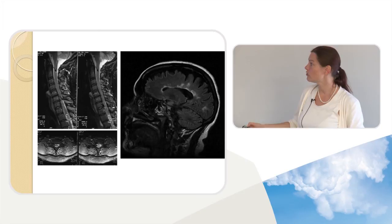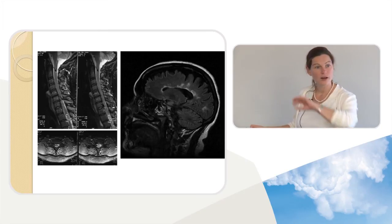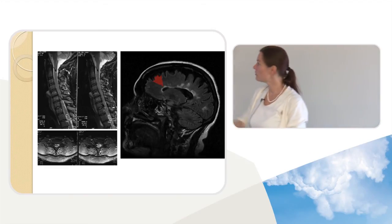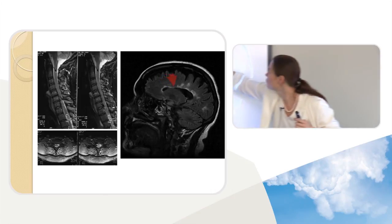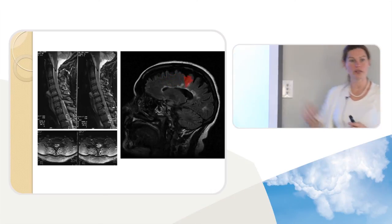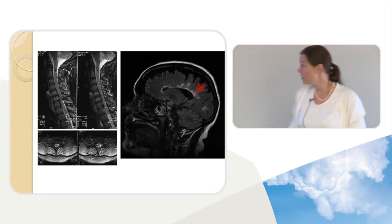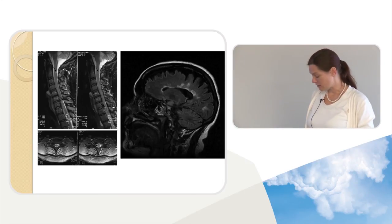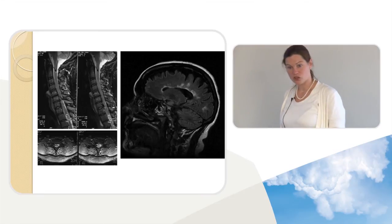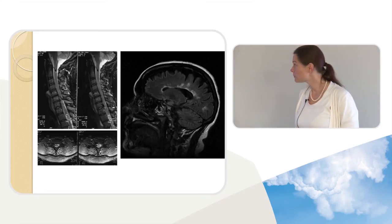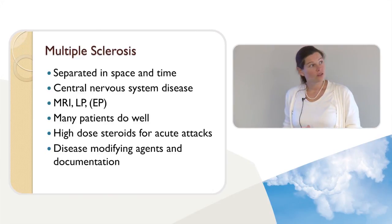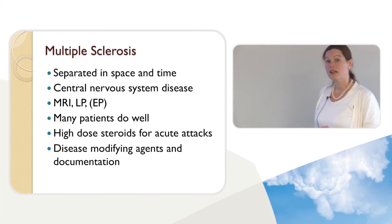We do a brain scan when we suspect MS because it helps with the diagnosis. These are typical MS lesions — the corpus callosum is a bit chewed up, not quite as thick as a normal scan, and you see projections going up called Dawson's fingers, which are a very typical feature we see in MS. To make a diagnosis of MS we need separation in space and time — two lesions in different anatomic locations separated by weeks or more commonly months.